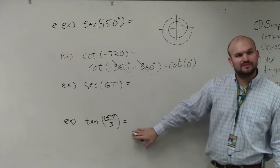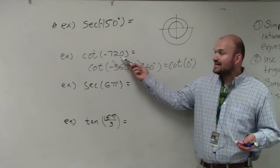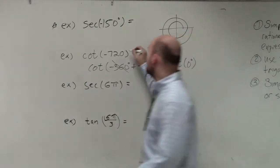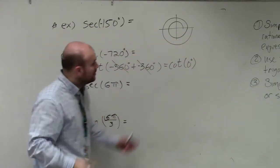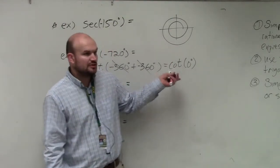It'll make a little bit more sense when I do this one, which is the same thing. But all I'm telling you is cotangent of negative 720 degrees is coterminal with the cotangent of 0 degrees. They're the same. They have the same initial and terminal side, right?